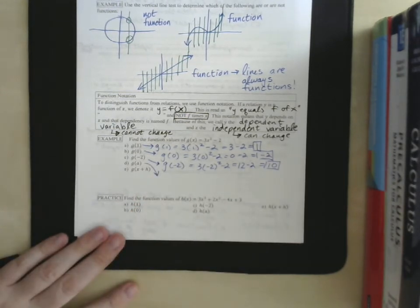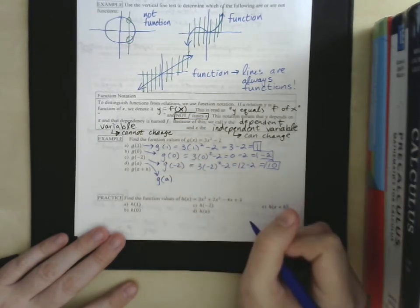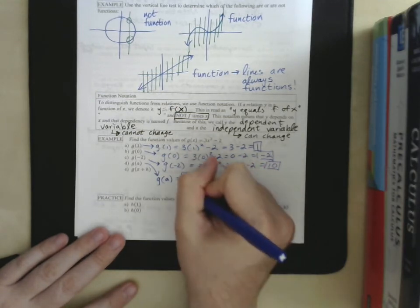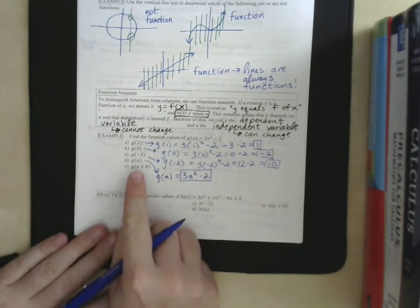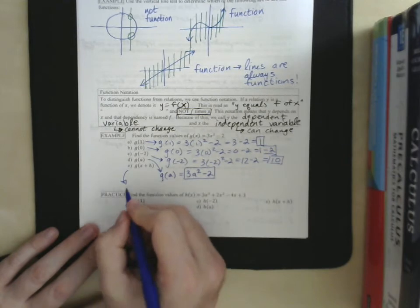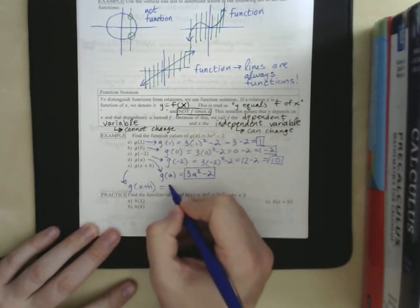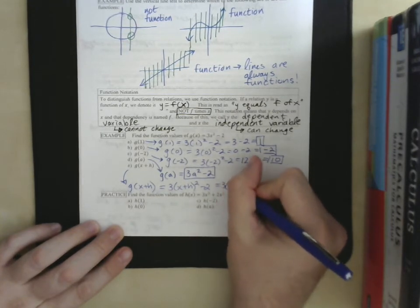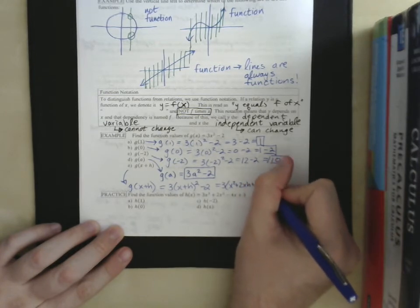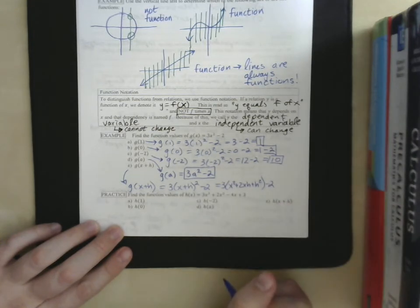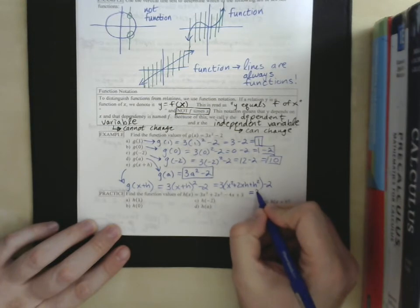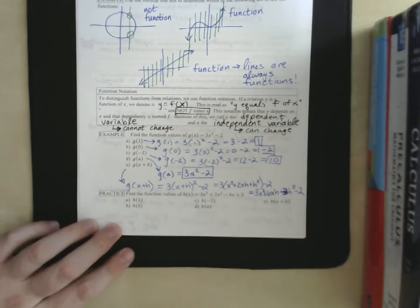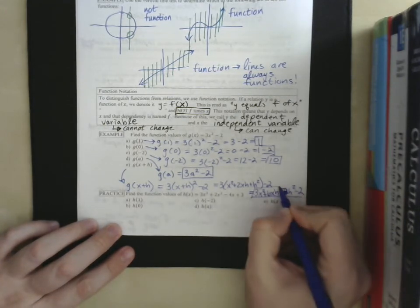And, part d here is really to reiterate that the replacement happens no matter what you see. So, even if you have a letter, g of a is 3 a squared minus 2. Now, I don't know what a is, so I cannot simplify this further. We leave it just like this. Even if we have something like in part e, g of x plus h, we still replace every x with x plus h quantity squared now. And, now this one we can simplify. This is 3 times x squared plus 2 x h plus h squared. It's one of our special products. Minus 2. And, this distributing the 3, we have 3x squared plus 6x h plus 3 h squared minus 2. Now, there's no other simplification I can do, so that's our final answer.